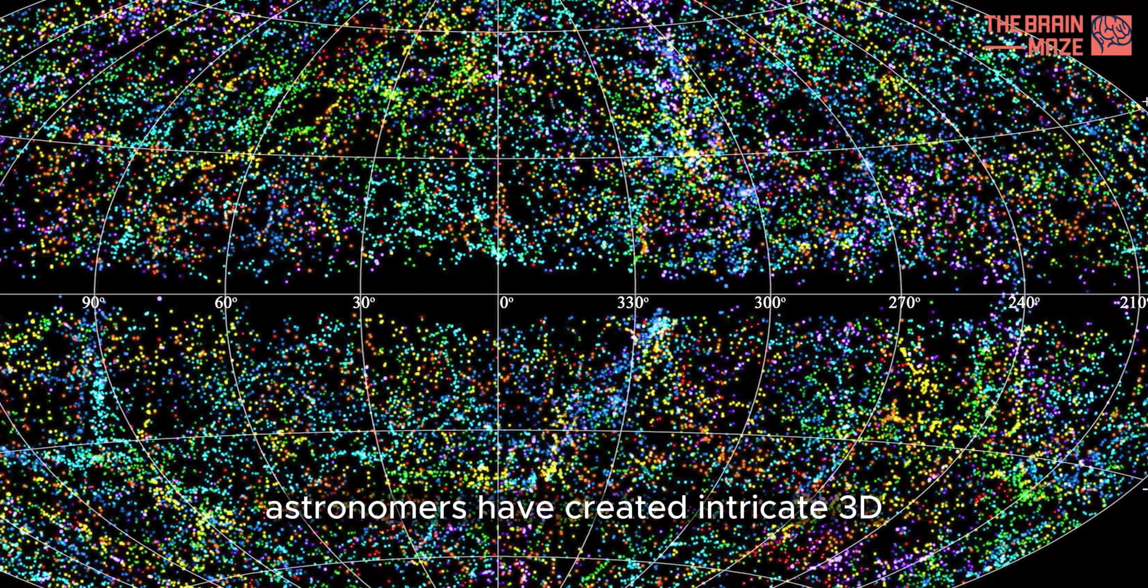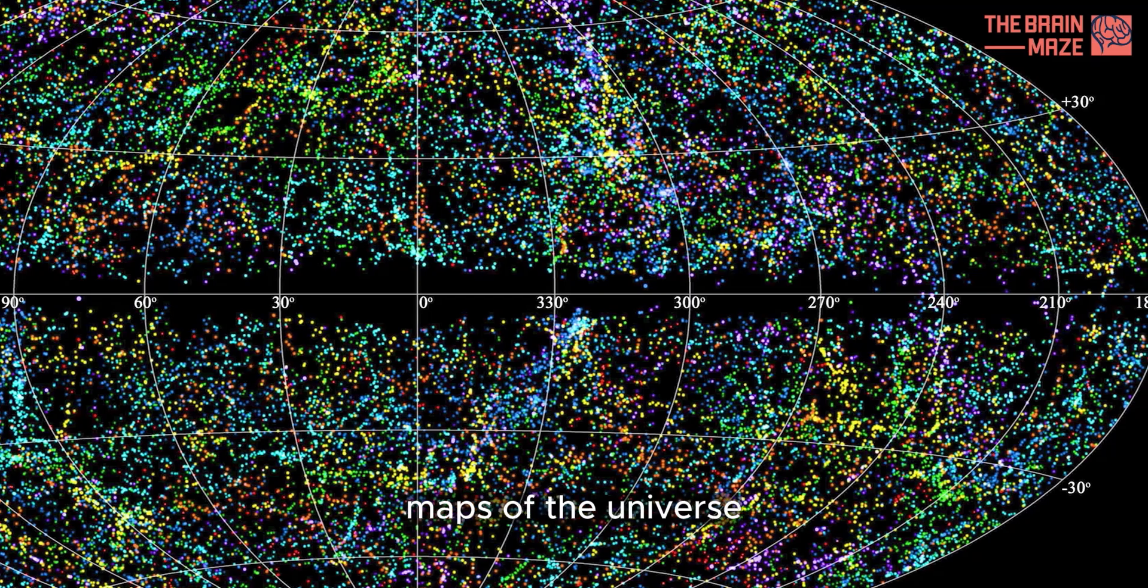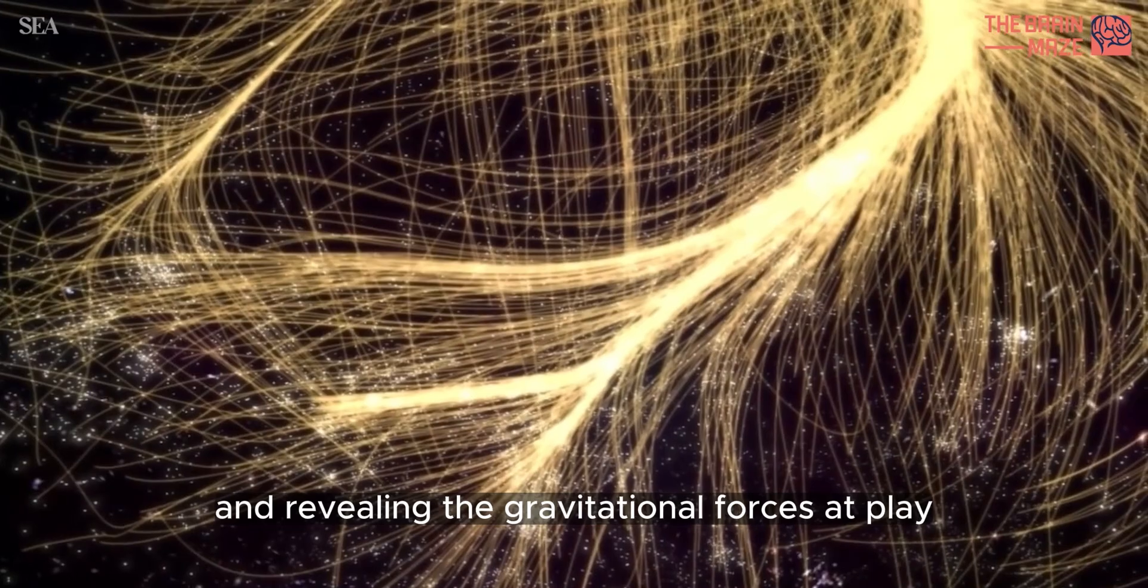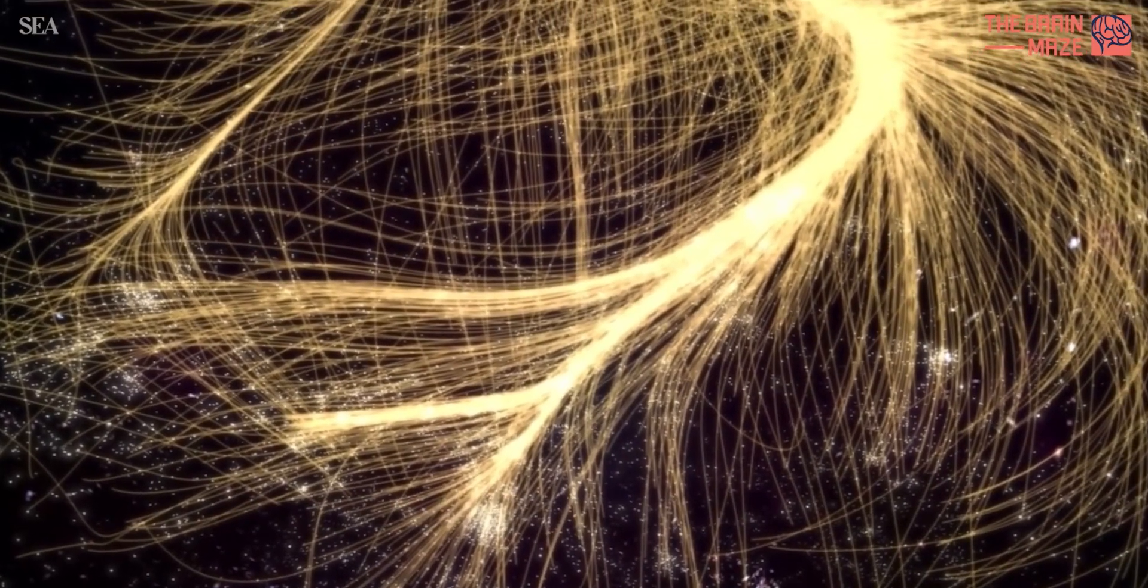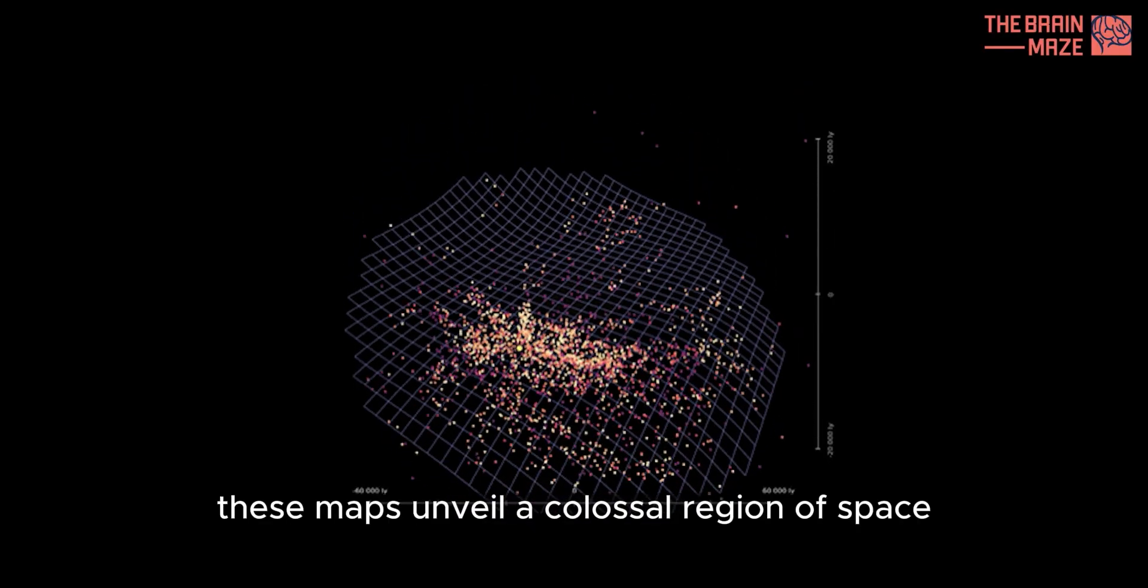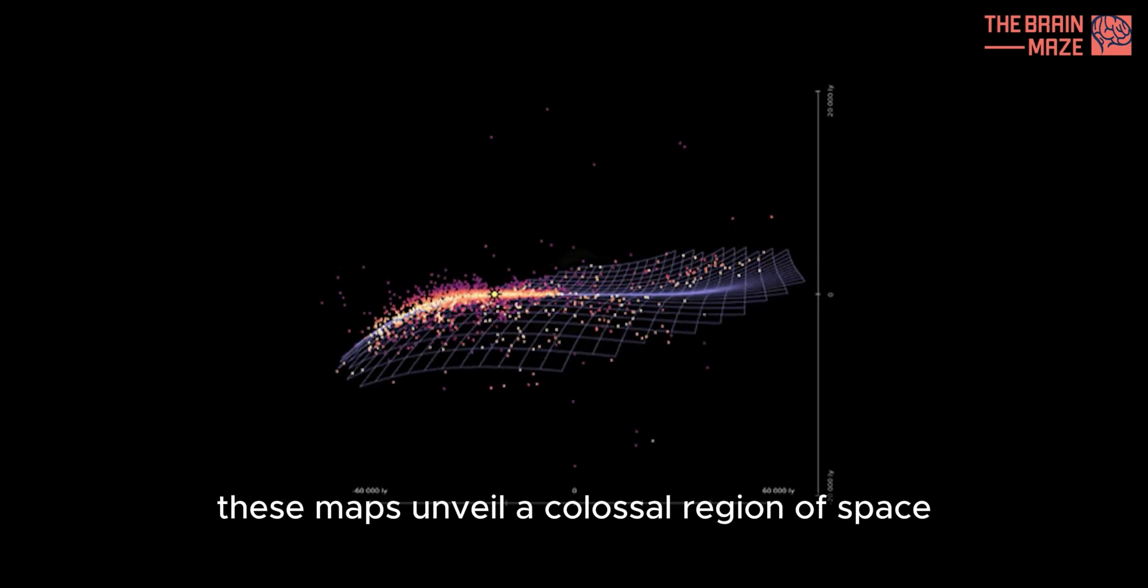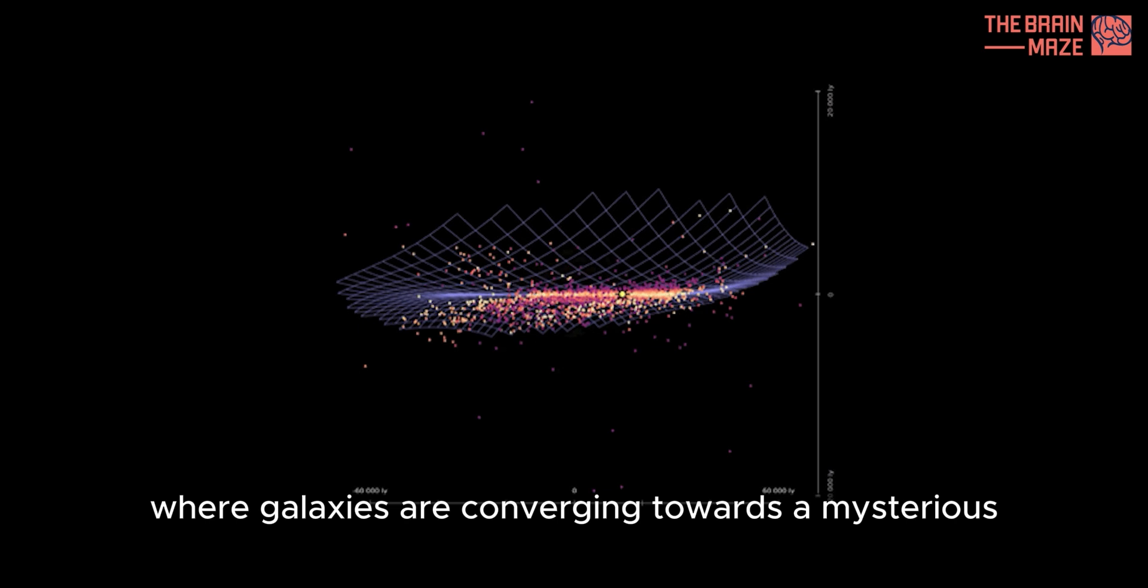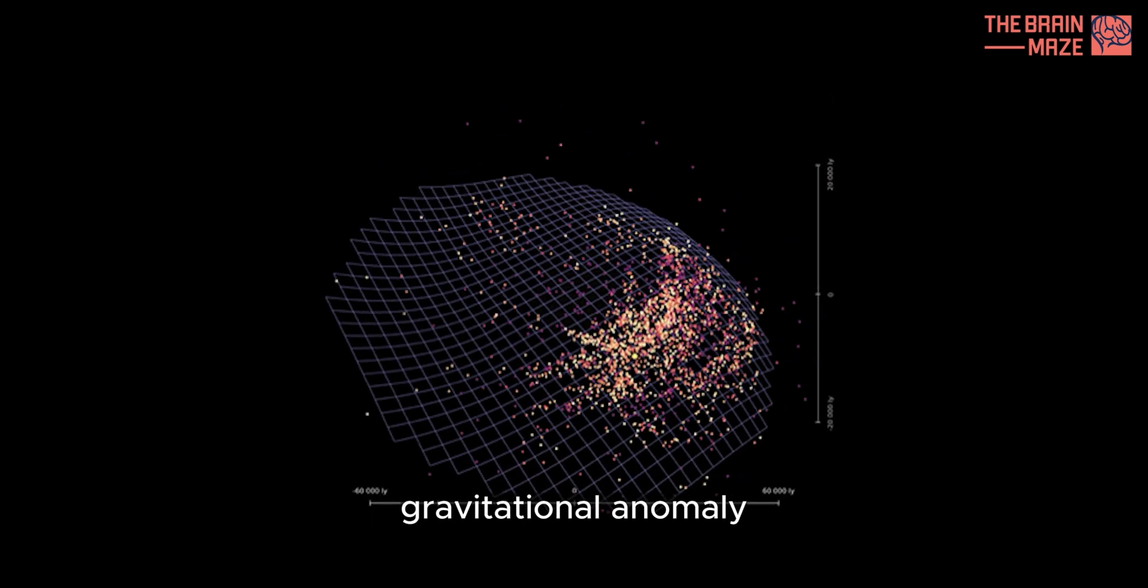Astronomers have created intricate 3D maps of the universe, charting the positions of galaxies and revealing the gravitational forces at play. Surprisingly, these maps unveil a colossal region of space, hidden behind the plane of our galaxy, where galaxies are converging toward a mysterious gravitational anomaly.